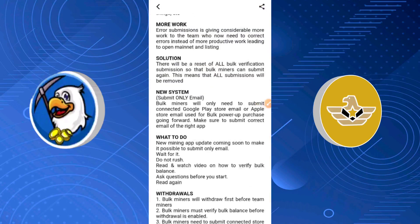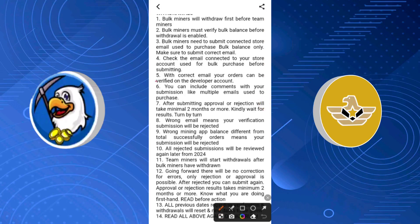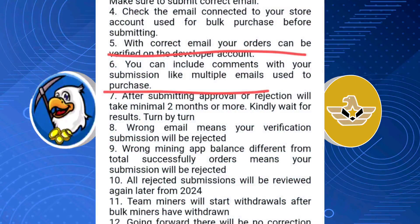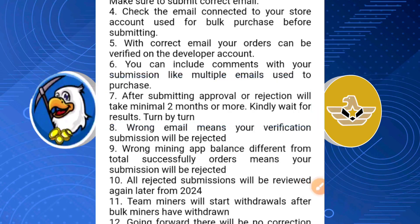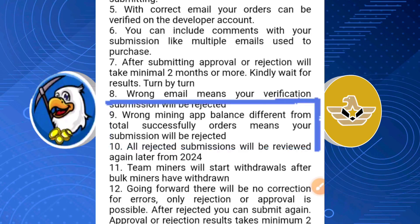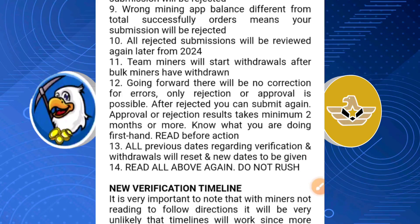Now here are important things you need to take note of. You can include comments with your submission, like multiple emails used to purchase. Submitting approval or rejection will take a minimum of two months or more — kindly wait for results. So the minimum you should expect before this arrives to your wallet is about two months, and it could take even more. Wrong email addresses means your verification submission will be rejected. Wrong mining app balance different from your actual totals also means your submission will be rejected — pay close attention to this.